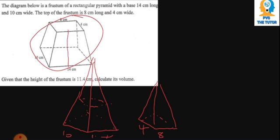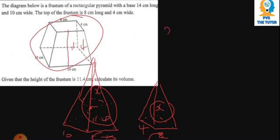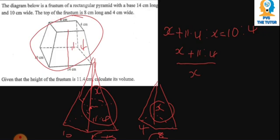They are saying the frustum has a height of 11.4, so from the base up to the cut is 11.4. We don't know the full height from the apex down, so we put x for that portion. Using similarity principles, the heights and bases are proportional, so we can say: (x + 11.4) over x equals 10 over 4.